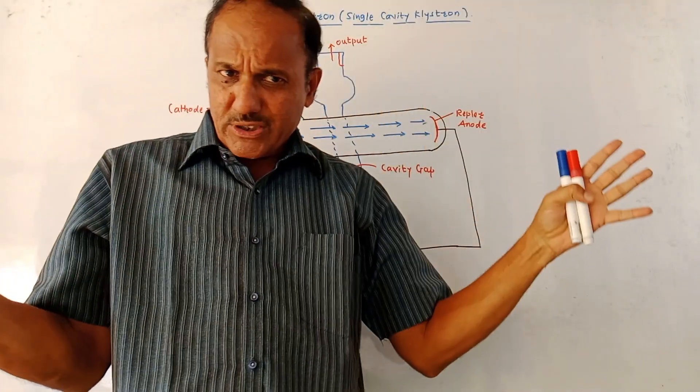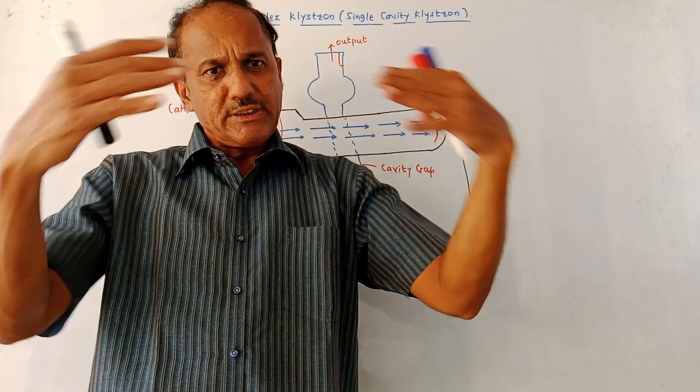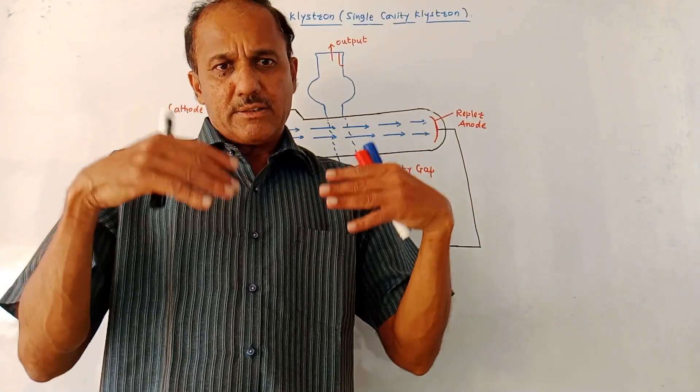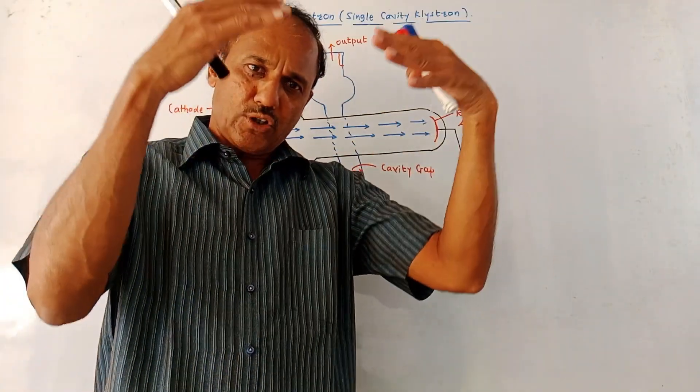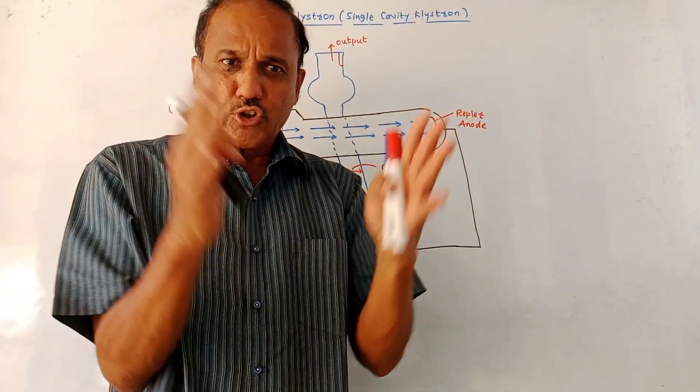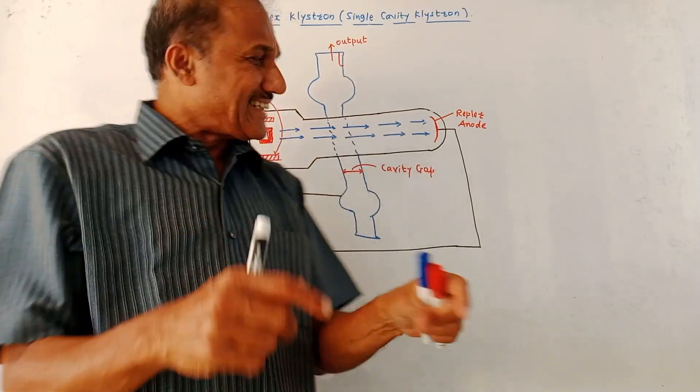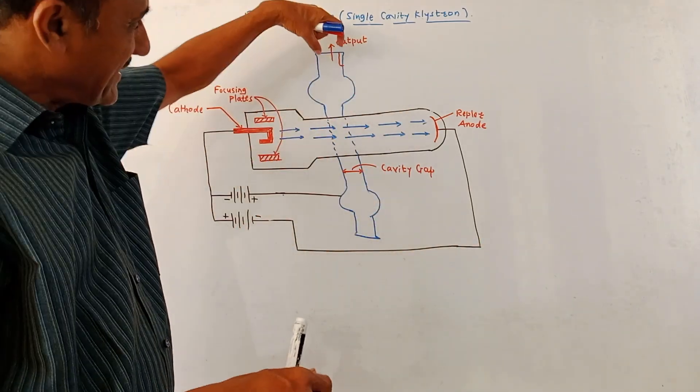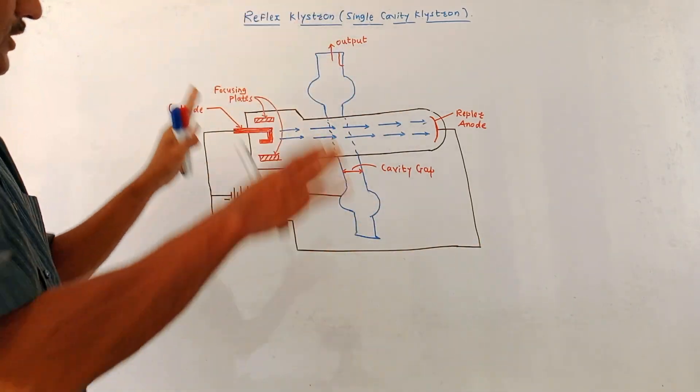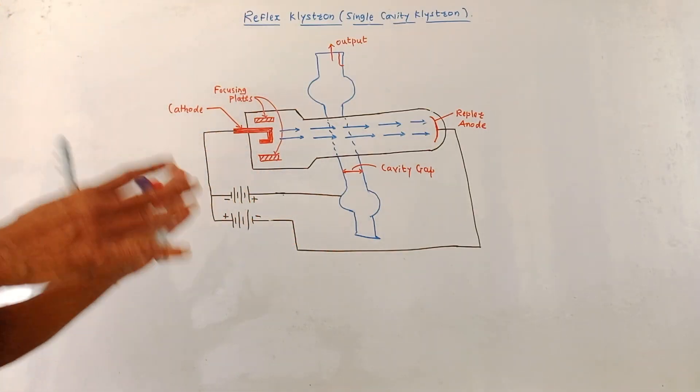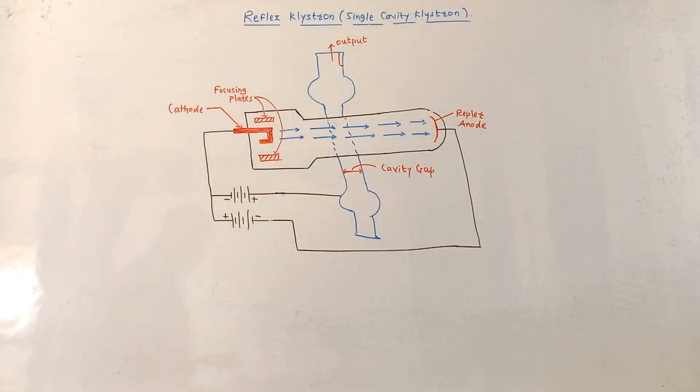To make it more simple: due to difference in speed, some electrons are accelerated, some electrons' speed is reduced, because of which different bunches of electrons are formed and the amplified signal is taken out from this end. This is about the construction and working of reflex klystron.